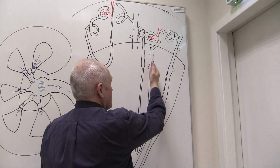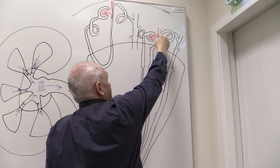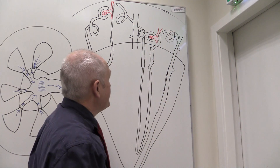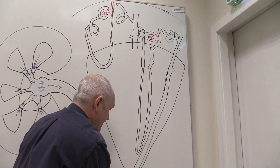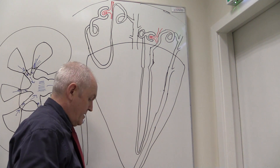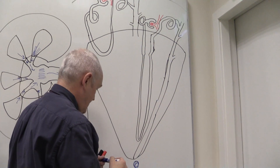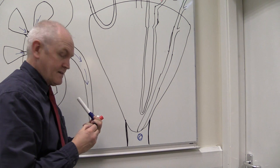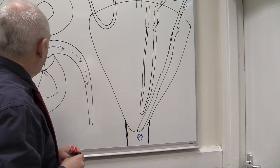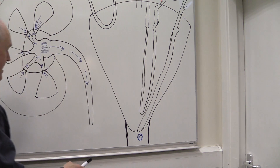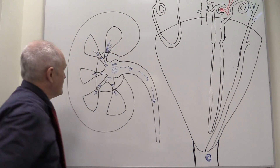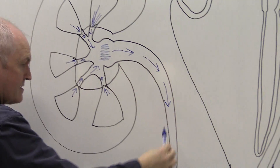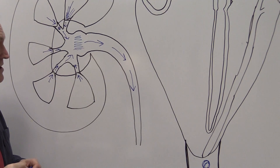As the ascending loop comes back up it gets thicker again, passes very close to the afferent arteriole, and goes into a second or distal convoluted tubule. Anything that's not reabsorbed goes into the collecting duct, and when it comes out at the base it's urine. That urine passes directly into a minor calyx associated with that particular medullary pyramid. Once formed, it goes into a minor calyx, into the major calyces, into the pelvis, and down into the ureter and onto the urinary bladder.